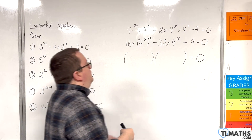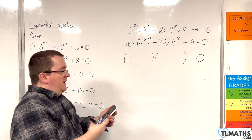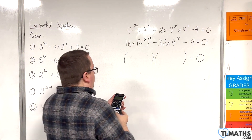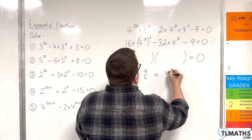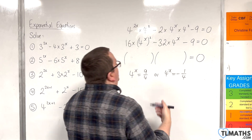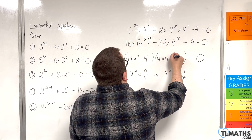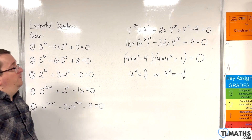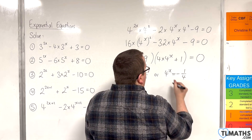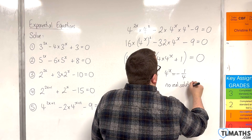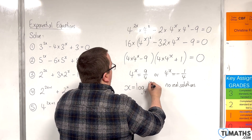Factorising with coefficients 16, minus 32, minus 9 — plugging into the calculator gives roots of 9 quarters and minus a quarter. So 4 to the x equals 9 quarters, or 4 to the x equals minus a quarter. Working backwards, the factorised form is: 4 lots of 4 to the x take away 9, times 4 lots of 4 to the x plus 1. Since 4 to the x can't be negative, there are no real solutions to the second bracket. The only real solution is x equals log base 4 of 9 quarters.